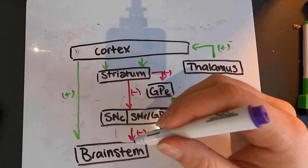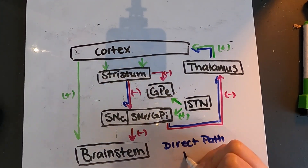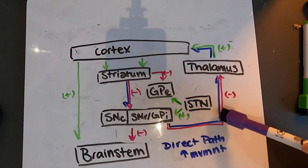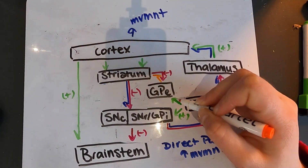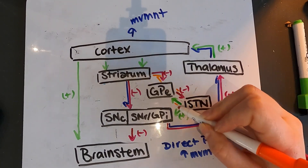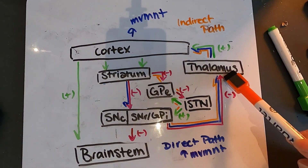The way the nigrostriatal pathway works is that dopamine plays a role in a very intricate interaction of the cortex, the basal ganglia, the thalamus, and back to the cortex — a loop that is in charge of our movement. There's a direct pathway from the striatum to the substantia nigra, and then from there to the thalamus, which then goes to the cortex and causes movement. The indirect pathway goes from the striatum to the globus pallidus external, to the subthalamic nucleus, and again to the thalamus, then the cortex, causing movement.